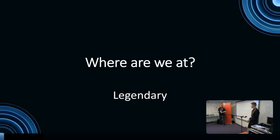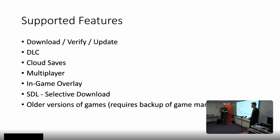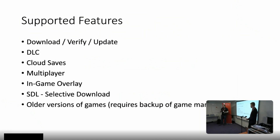Where are we at right now with support? For Legendary, we have the main features down: you can download games, update them, handle DLC. Legendary supports online authentication DRM, so you can do multiplayer. You can install the in-game overlay which has most of the social features. You can do selective downloading, so if you have games with different language packs, all that works. And you can use all versions of games if you have the manifest, which is mainly interesting for speedrunners or reverse engineers that need all the versions of games.